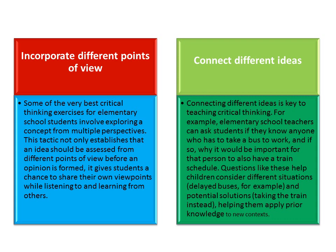Number four: incorporate different points of view. Some of the best critical thinking exercises for elementary school students involve exploring a concept from multiple perspectives. This tactic not only establishes that an idea should be observed from different points of view before an opinion is formed — it gives students a chance to share their own viewpoints while listening to and learning from others. This is also connected to working in groups, where you naturally encounter other points of view.